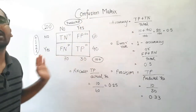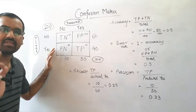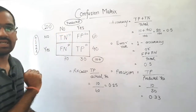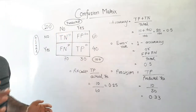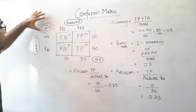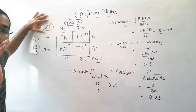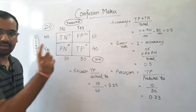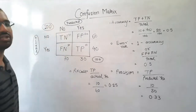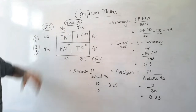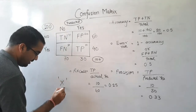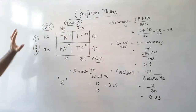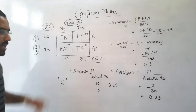Various questions related to this concept will be cleared with this single video. The example I've considered shows a matrix being constructed. We have a total of 100 patient medical records — that number is very important — and they are with respect to a disease X. Here we have some predicted values and actual values.